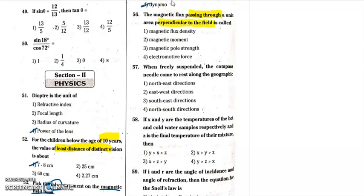Question 56: the magnetic flux passing through unit area perpendicular to the field. Magnetic flux per unit area gives flux density. The other options — magnetic moment, energy product of length and magnetic force strength — check those; the remaining options are wrong.